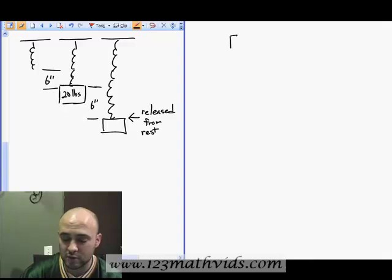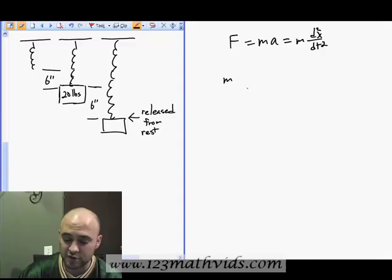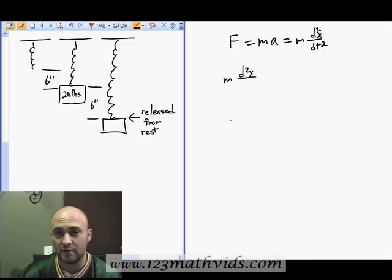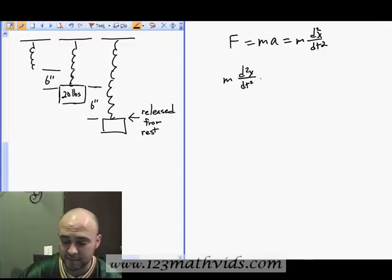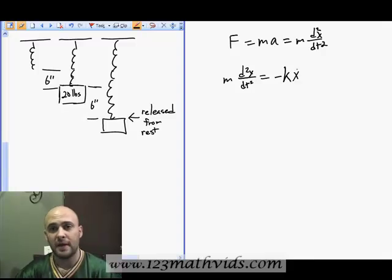We're going to start with force equals mass times acceleration, which equals mass times the second derivative of position with respect to time. In the above example, we determined that our differential equation was mass times the second derivative of position equals negative spring constant times position.